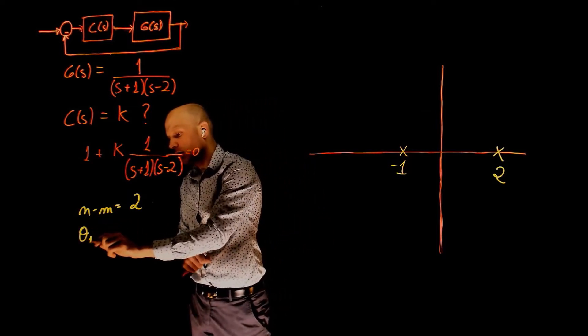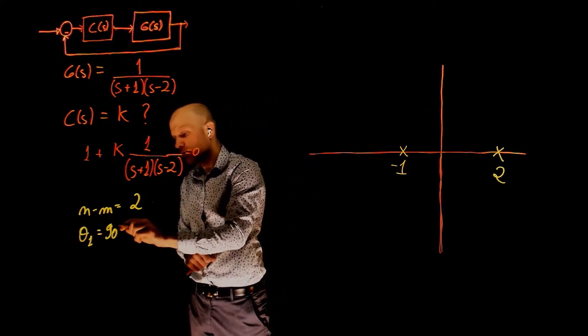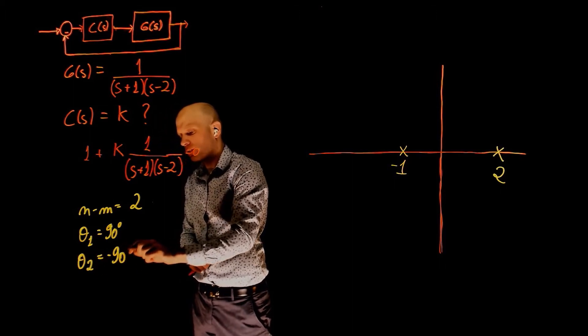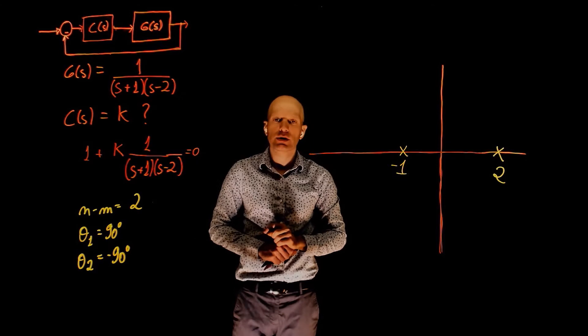We know how to calculate the angle of those asymptotes for N minus M equals to 2. By now we should know that theta 1 is 90 degrees, and theta 2 is negative 90 degrees.